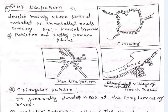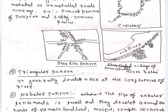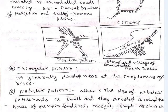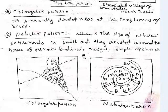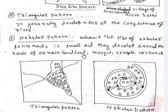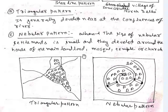The triangular pattern generally develops near the confluence of rivers. The nebular pattern consists of small settlements that develop around the house of the main landlord, a temple, or a church.